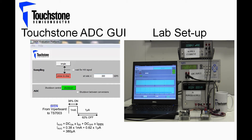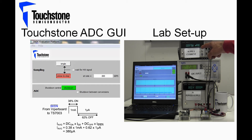At this time, the shutdown pin is disabled, as shown below the sampling section of the GUI screen. As you can see, the supply current is at approximately 1 milliamp.